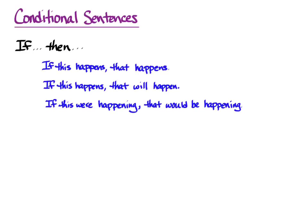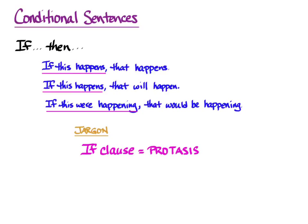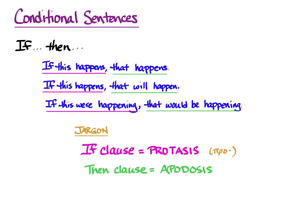Greek also uses different moods and tenses to give different implications to the conditions in if-clauses coming true or not. Let me give you a little bit of jargon before I show you how Greek does conditionals. The if-clause is called the protasis. In our English examples, the protases are 'if this happens,' 'if this happens,' and 'if this were happening.' The then-clause jargon is apodosis. So the apodoses are 'that happens,' 'that will happen,' and 'that would be happening.' You can even see from the Greek you already know the 'before' in the 'prot-' of protasis, and that helps remember the jargon.